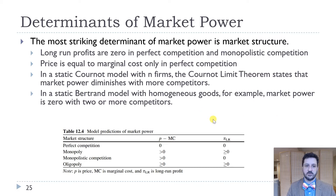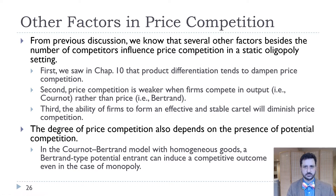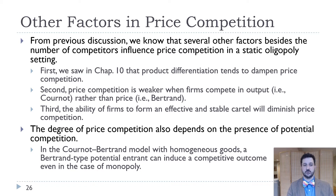We want to think about some of these determinants, keeping in mind that there are going to be other factors in price competition. Product differentiation is a big determinant in dampening price competition. If firms can differentiate their products — either actually differentiate or just differentiate in the minds of their consumers — that is going to decrease price competition.